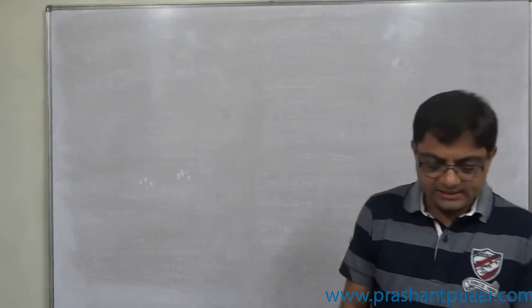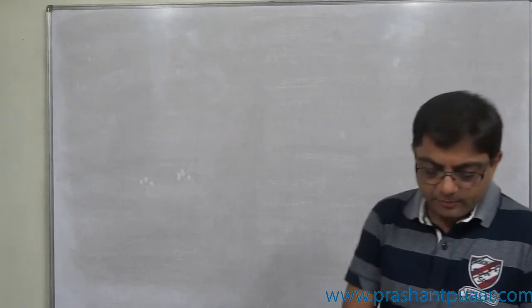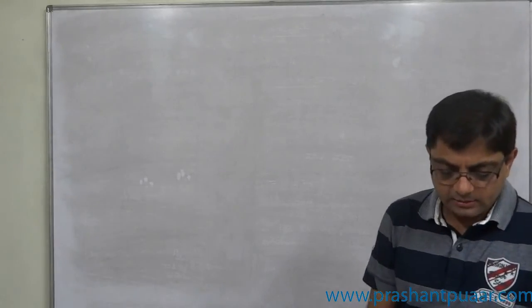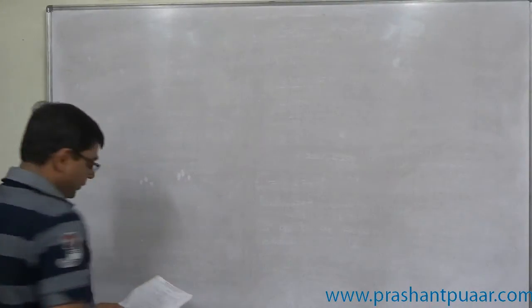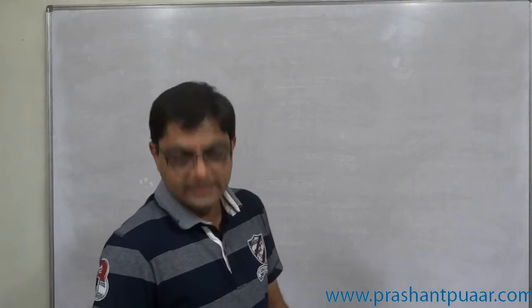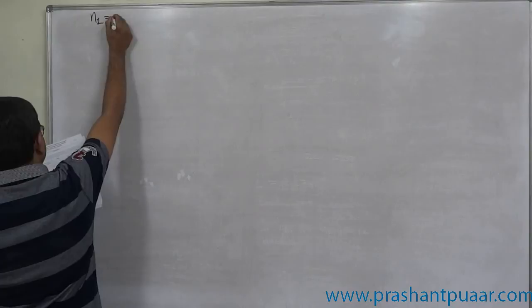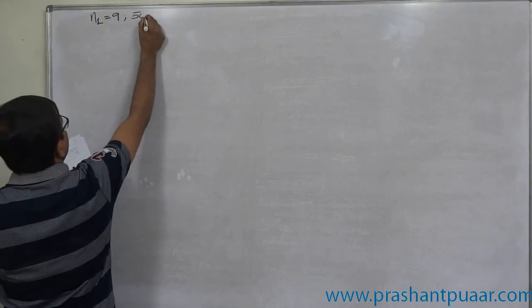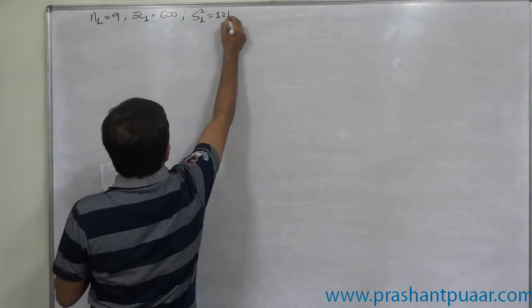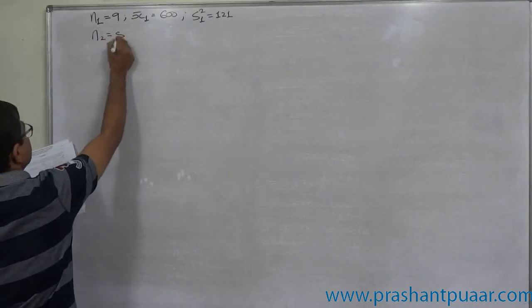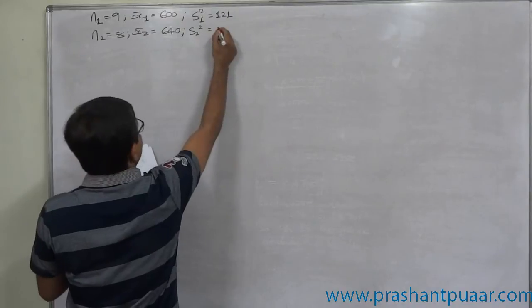Next case: two types of batteries are tested for length of time and the following data are obtained. Type A and B, sample sizes 9 and 8, mean 600 and 640, and variance 121 and 144. Is there a significant difference between the two means? So this is a pure case of two-tail test. Let us prepare the summary: n₁=9, x̄₁=600, s₁²=121. Similarly, n₂=8, x̄₂=640, s₂²=144.